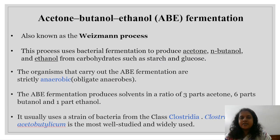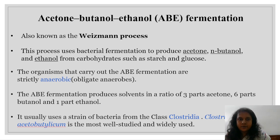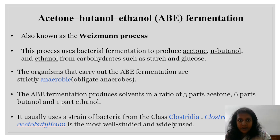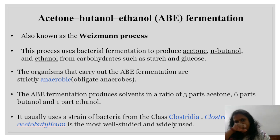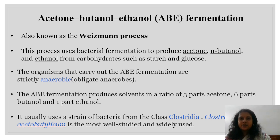Next is acetone, butanol, ethanol fermentation — it is also called the Weizmann process. This process uses bacterial fermentation to produce acetone, butanol, and ethanol from carbohydrates such as starch and glucose. For example, butanol and ethanol — we are using butane. The main butane we are using is our Bharat petroleum gas.